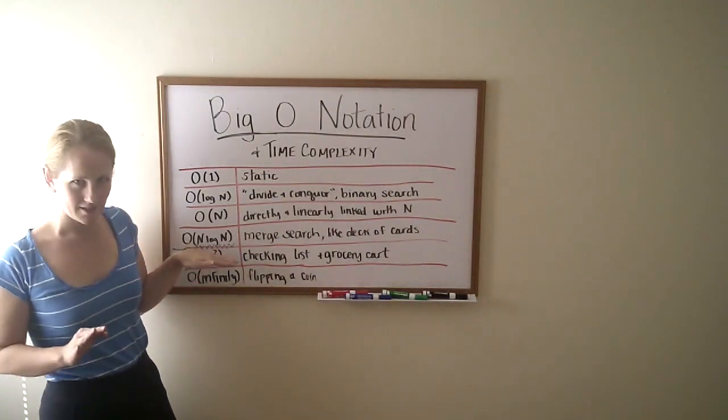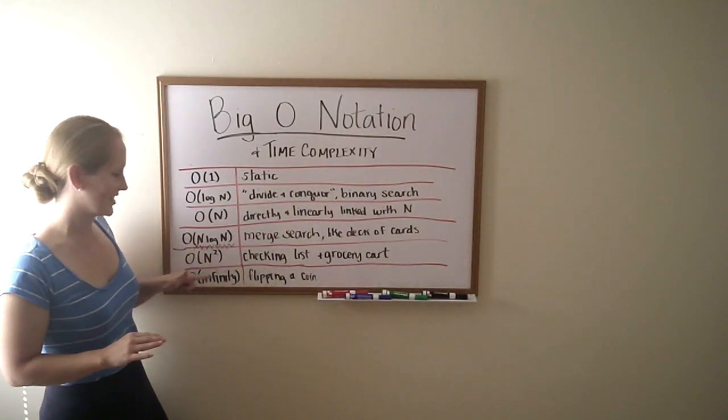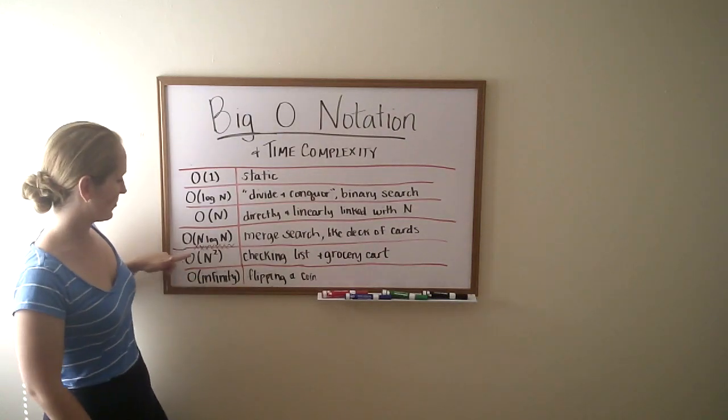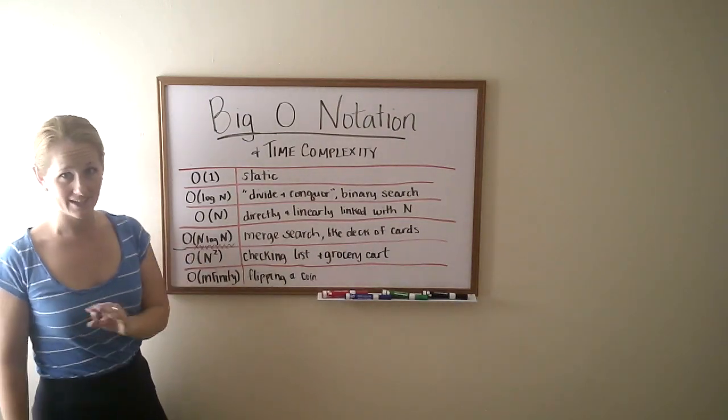Now I drew a bunch of X's in between here because this is where you start to get into the danger zone. This is O n to the power of 2. Exponential.